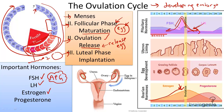During the luteal phase, from day fourteen to day twenty-eight, hormone levels for progesterone are incredibly high, allowing for the thickening of the endometrium — the lining of the uterus. This helps to further maintain the life of an ovum as it travels through the oviduct and into the endometrium for implantation.